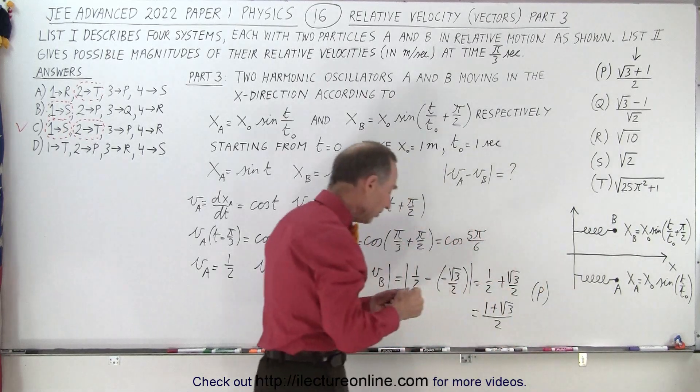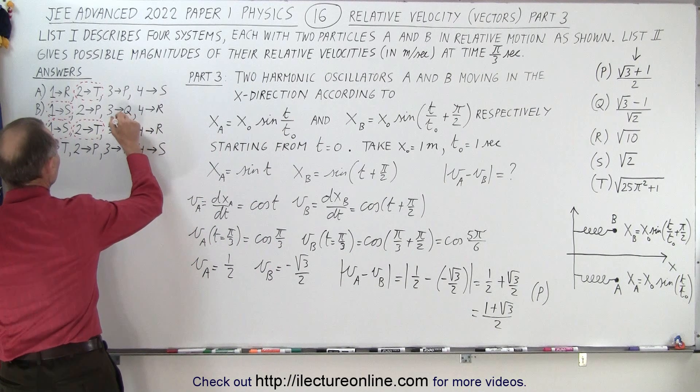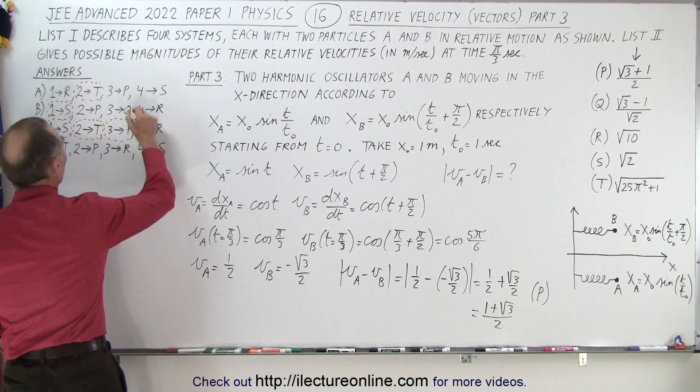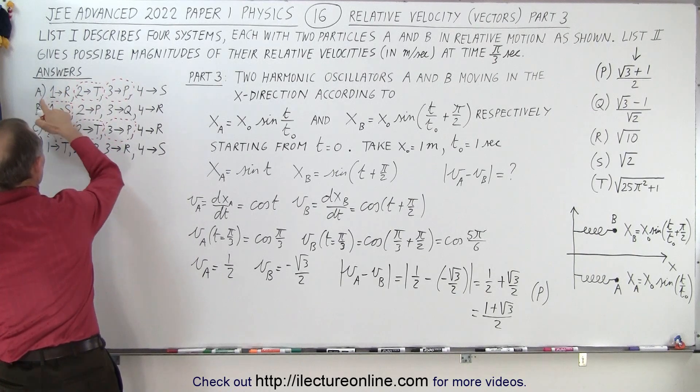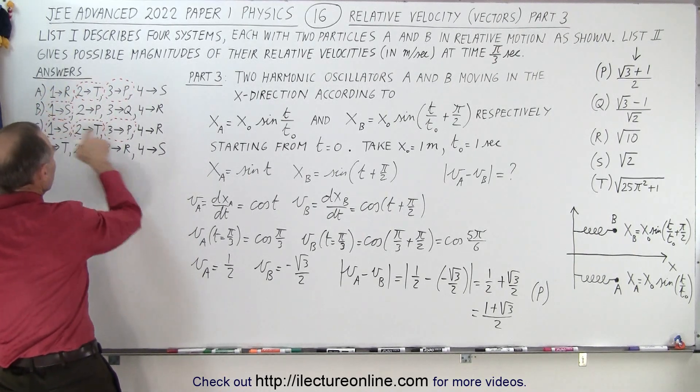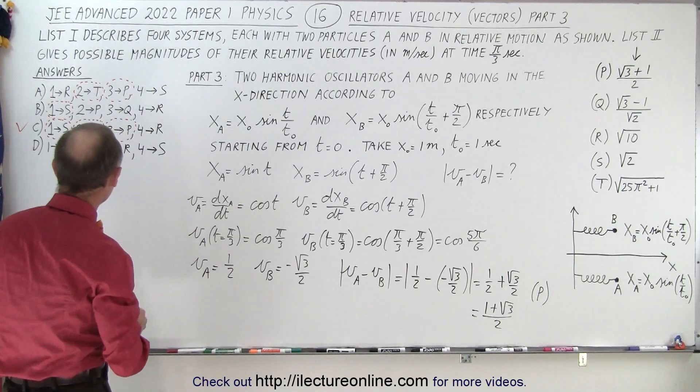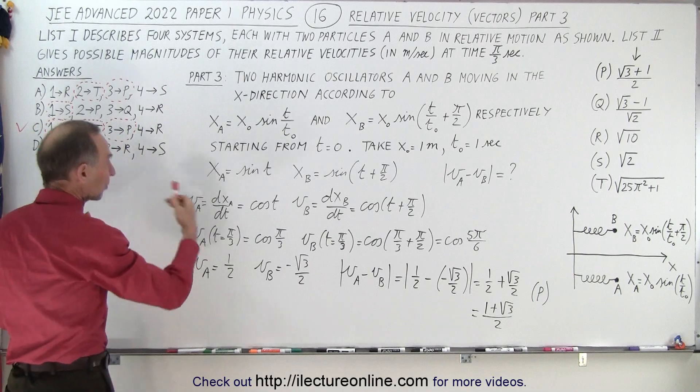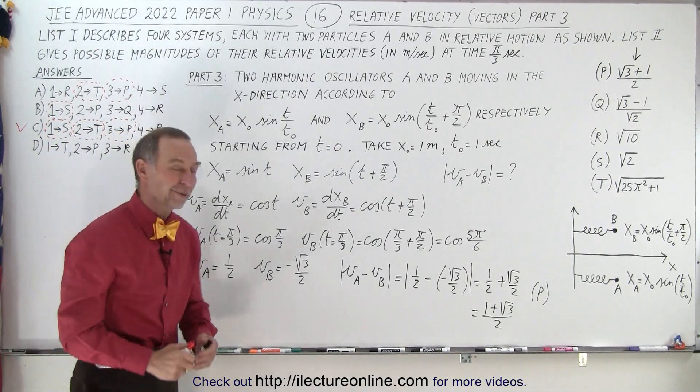And so that means that for the third part, P is correct, which means it's either this or this. Of course, we know that A can no longer be the solution because for part one, we did not get the solution R. But you can see that we're still consistent. This time, we found the correct answer for part three. And so we're still on track to say that C is the correct answer for this particular problem.